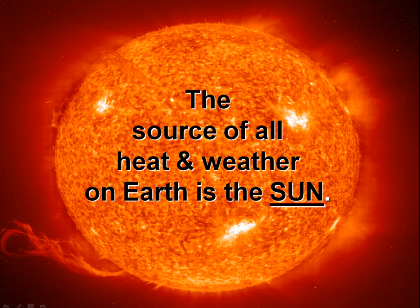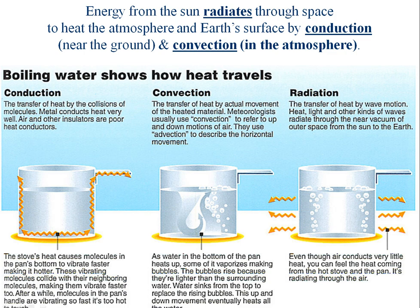In terms of temperature, the source of all heat and weather on Earth is the sun. Heat travels in three different ways. Energy from the sun radiates through space through waves — that's radiation. Heat the surface primarily by conduction. And then we have convection within the atmosphere.